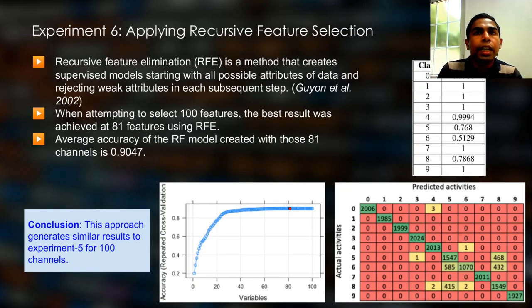Recursive feature elimination is another method we evaluated with our EM side channel dataset. Here, RFE, recursive feature elimination, creates supervised models starting with all possible attributes of the data and then rejects weak attributes in each subsequent step.